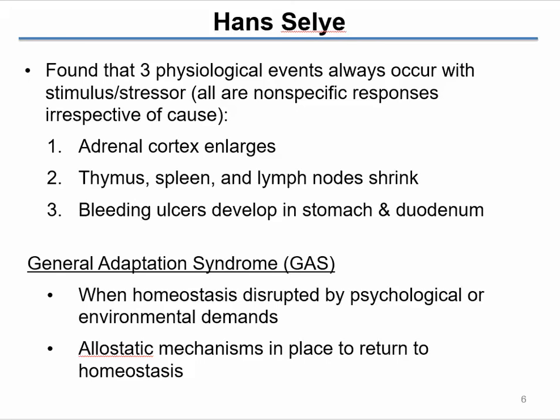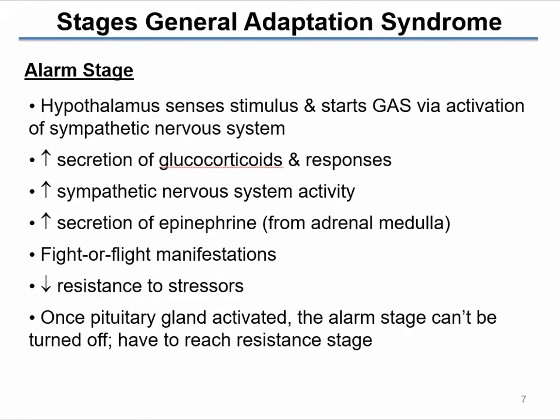He developed this theory called the General Adaptation Syndrome, which is really about homeostasis being disrupted by demand, and how we use allostasis and allostatic mechanisms to try and return to homeostasis. It happens in a very predictable and orderly manner, and he looked at the stages of the General Adaptation Syndrome. You've probably covered this in previous courses, so we'll go through it fairly quickly.